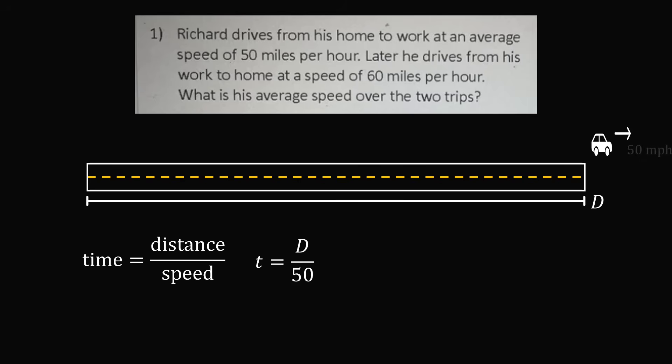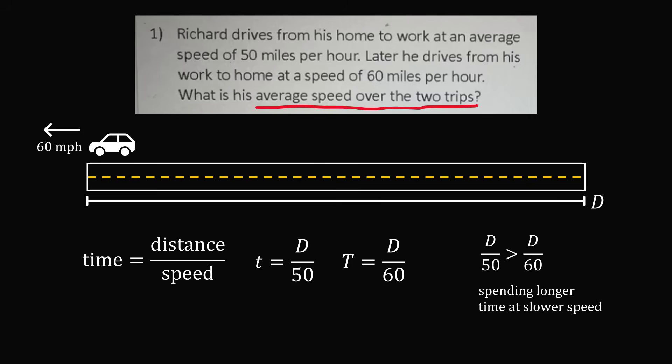So Richard can drive to work at 50 miles per hour and the time will be equal to d divided by 50. Now Richard returns home at an average speed of 60 miles per hour. The return trip time is d over 60. Notice that the time to go to work will be longer because d over 50 is greater than d over 60. So you're spending a longer time at a slower speed, which is going to drag down the average speed for the entire trip.